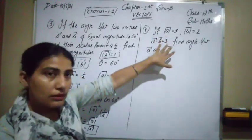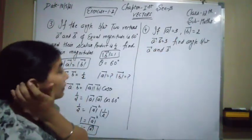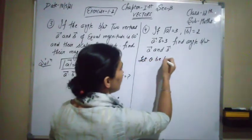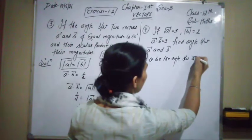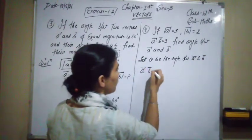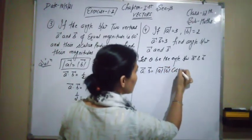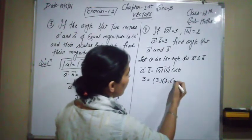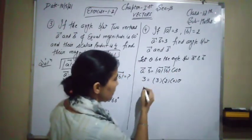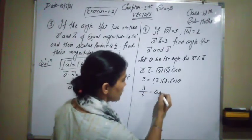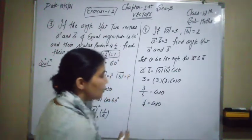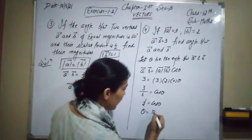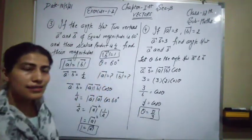In the fourth question, |a⃗| = 3, |b⃗| = 2, and a⃗·b⃗ = 3 are given; we have to find the angle θ between a⃗ and b⃗. Using a⃗·b⃗ = |a⃗||b⃗| cos θ: 3 = 3 × 2 × cos θ, so cos θ = 3/6 = 1/2. Therefore θ = cos⁻¹(1/2) = 60° = π/3.